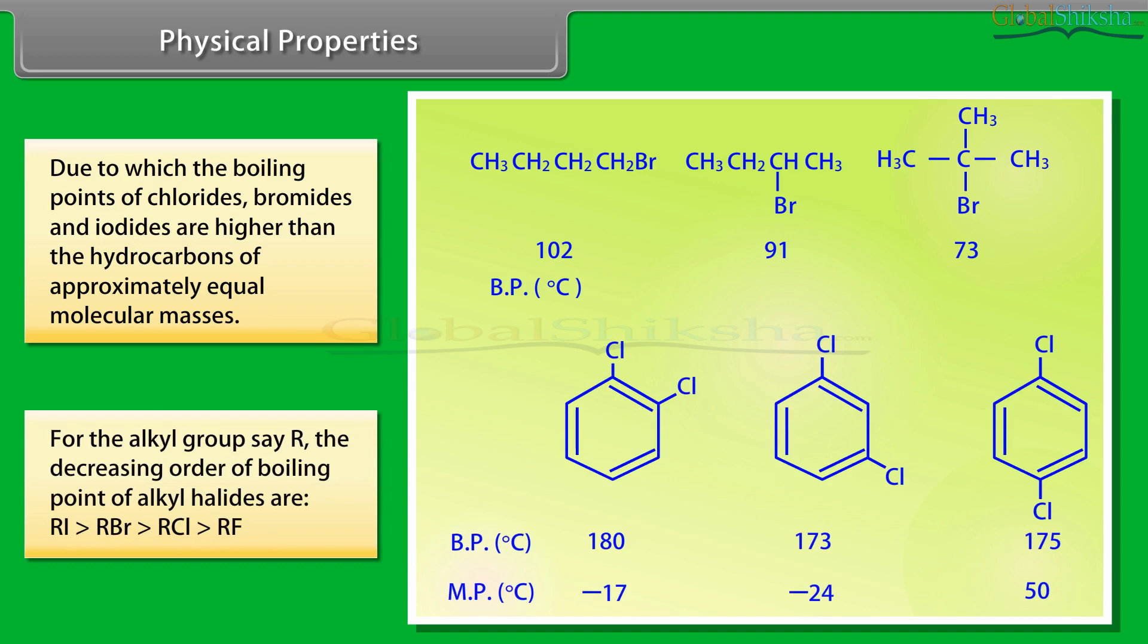For the alkyl group say R, the decreasing order of boiling point of alkyl halides are: RI has the highest boiling point, followed by RBr, then RCl, and then RF.